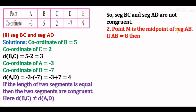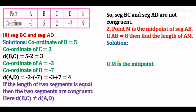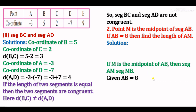Question 2: Point M is the midpoint of segment AB. If AB equals 8, then find the length of AM. The length of segment AB is given as 8, and M is the midpoint. If M is the midpoint of AB, then segment AM and segment MB are equal. AM equals half of AB, so AM equals 8 divided by 2, which gives us 4.